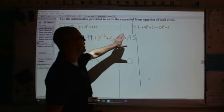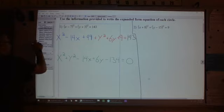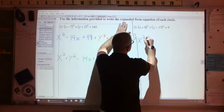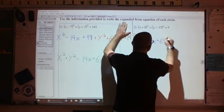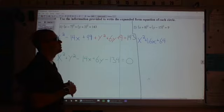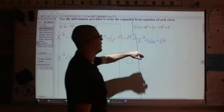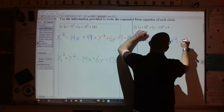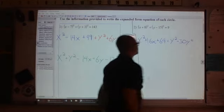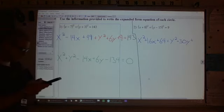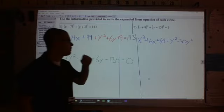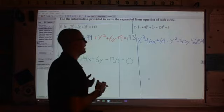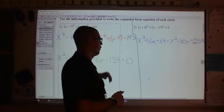If I do the same thing on number 2, we will get its expanded form. So we would start, x plus 8 squared would be x squared plus 16x plus 64. And if there was a coefficient here, we would have to expand and then distribute the coefficient, but we're not seeing any of those right now. Y minus 15 squared would be plus y squared minus 30y plus 225 equals 9.